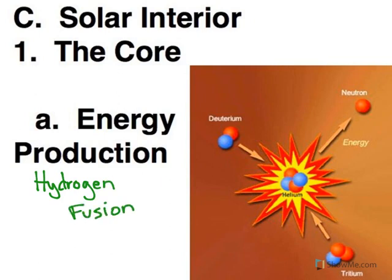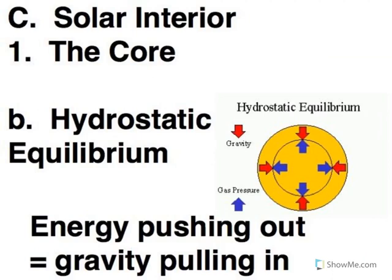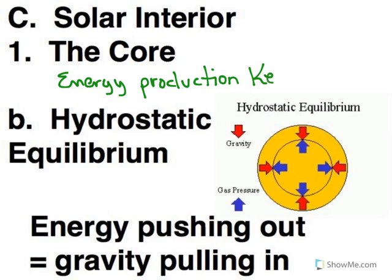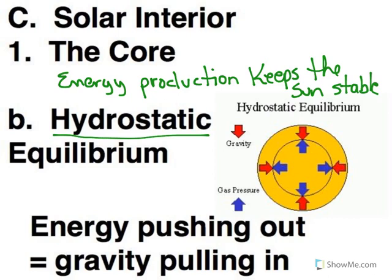And the core is uniquely suited for this energy production. So all the light that you see coming from the Sun originates here in the core. Now that energy production is also what keeps the Sun stable. It's going to push outward, and that stability is given this very fancy name, hydrostatic equilibrium.